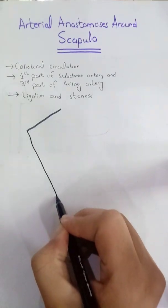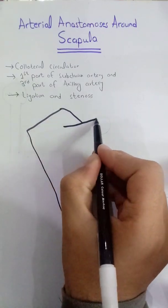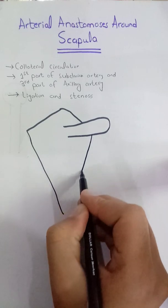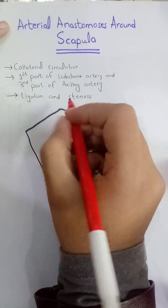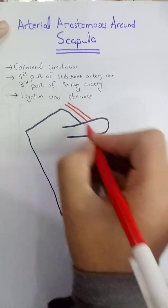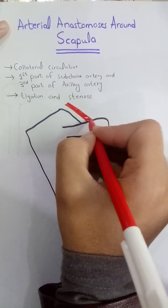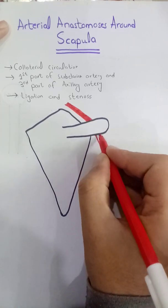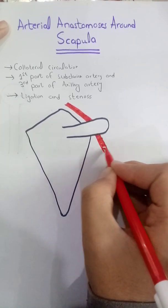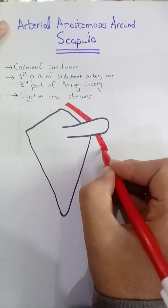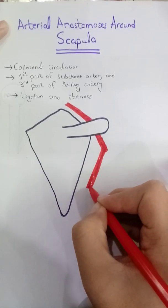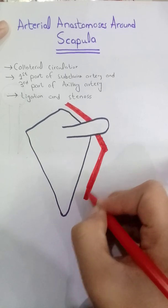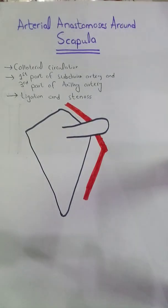First of all we will draw a scapula. This is the scapula. Now we will draw the subclavian artery and the axillary artery. Here will be the subclavian artery, and at this point it is changing into the axillary artery. Now this is the axillary artery.